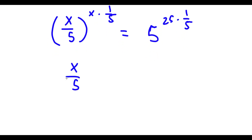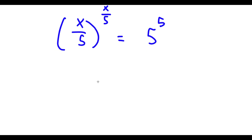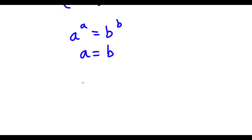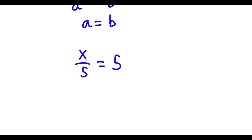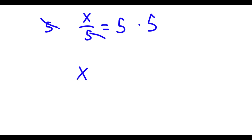x times 1 over 5 simply equals x over 5, and 25 times 1 over 5 is the same as 25 divided by 5, which is simply 5. So now if I have something in the form a to the power of a equals b to the power of b, this means a equals b. In this case, x over 5 to the power of x over 5 equals 5 to the power of 5, which means x over 5 equals 5. To solve this, I multiply by 5 on both sides, so these cancel out and I have x equals 5 times 5, which is 25.